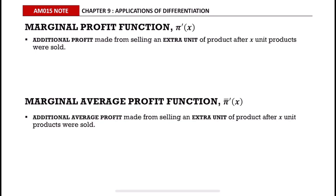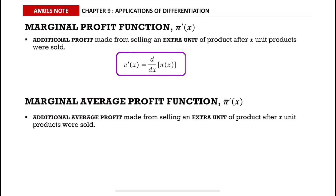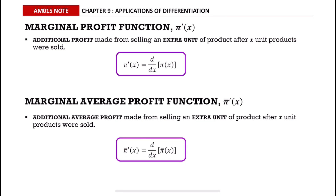The marginal profit function is denoted as π'(x). It is the additional profit made from selling an extra unit of product after x units were sold. The marginal profit function equals the differentiation of the profit function. The marginal average profit function is denoted as π̄'(x) — it is the additional average profit made from selling an extra unit after x units were sold, and equals the differentiation of the average profit function.